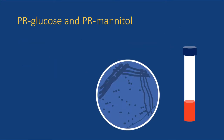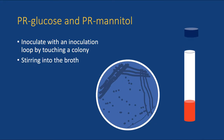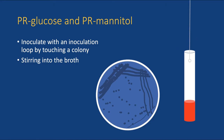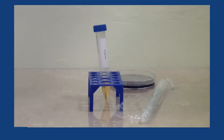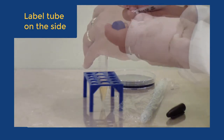To inoculate PR glucose and PR mannitol, you will use an inoculation loop to touch a colony and stir the loop into the broth. Replace the cap loosely and incubate the tube for two days. Be sure to use a new loop for each of the media.